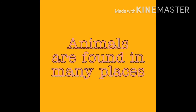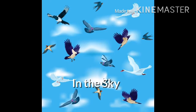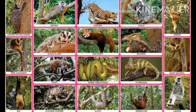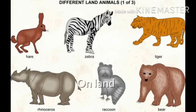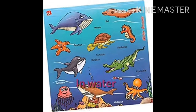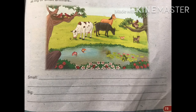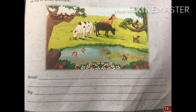Animals are found in many places — in the sky, on trees, on land, and in water. In your book on page number 75, you can spot 10 animals. You need to identify which animal is big and which is small, and write it down.